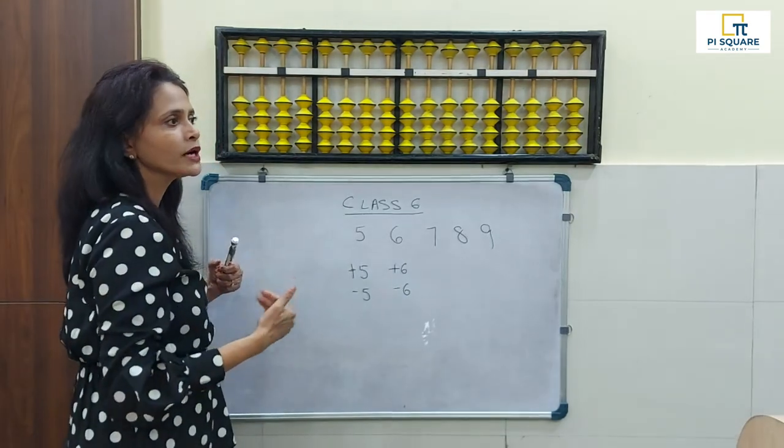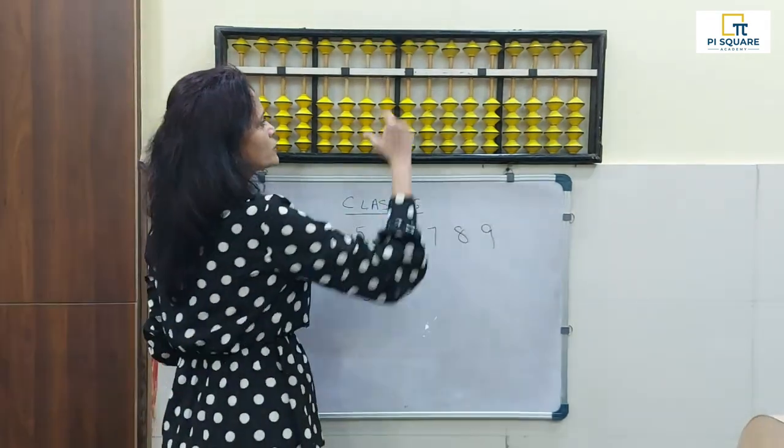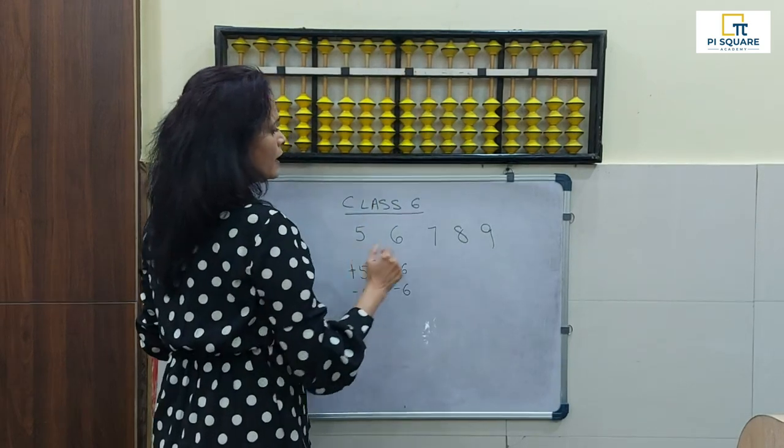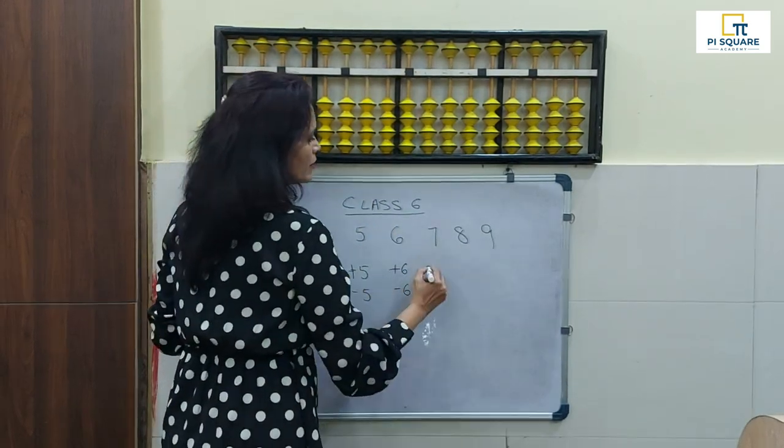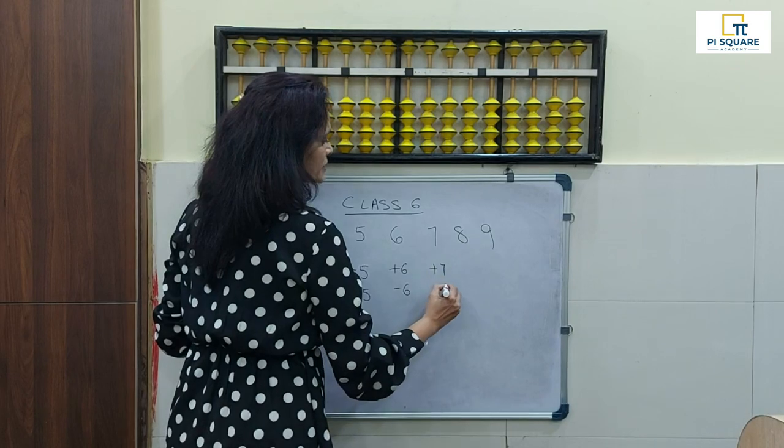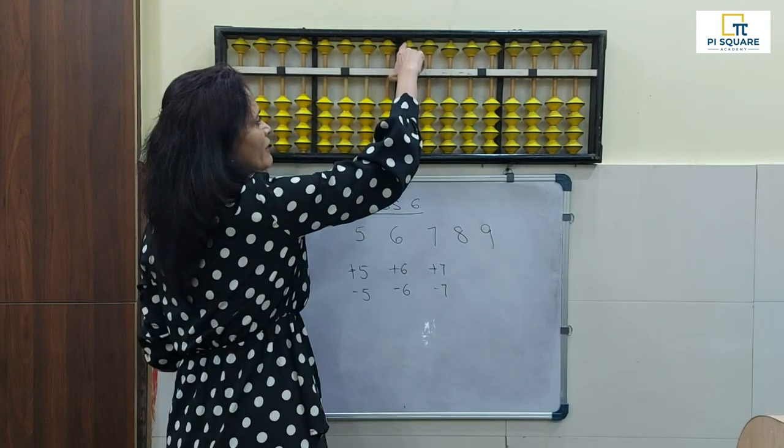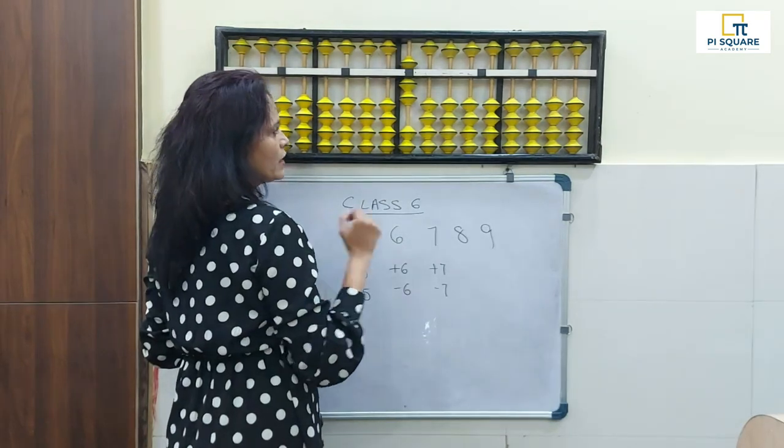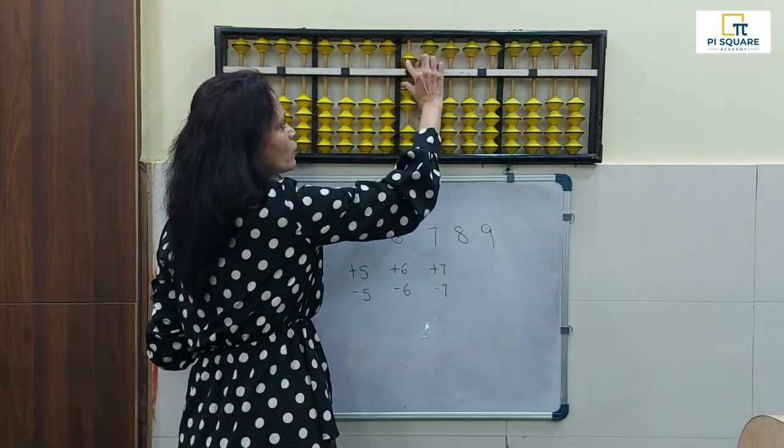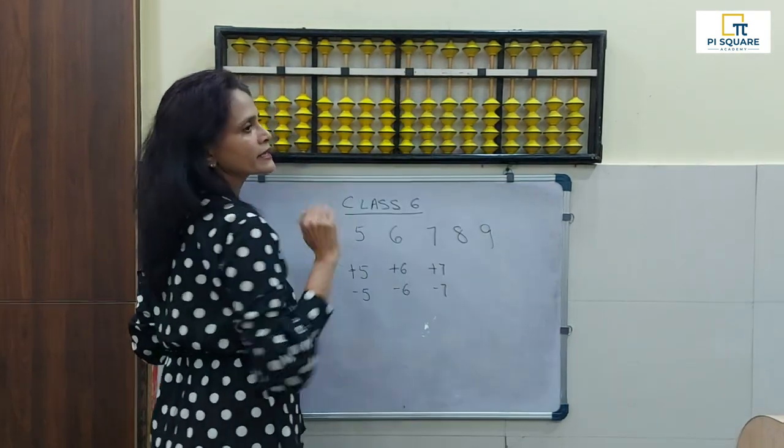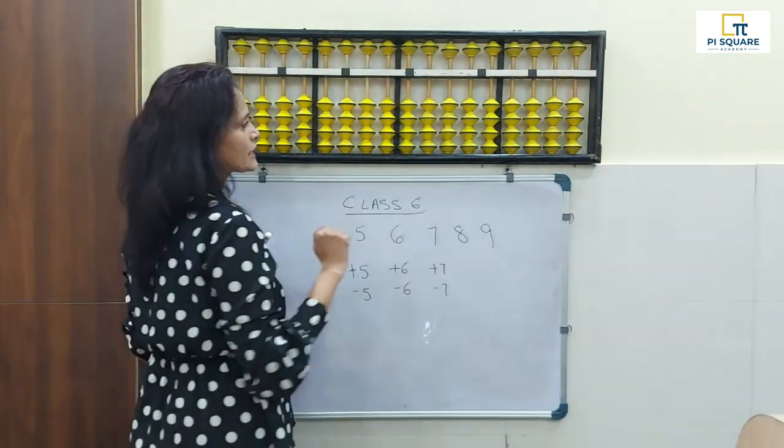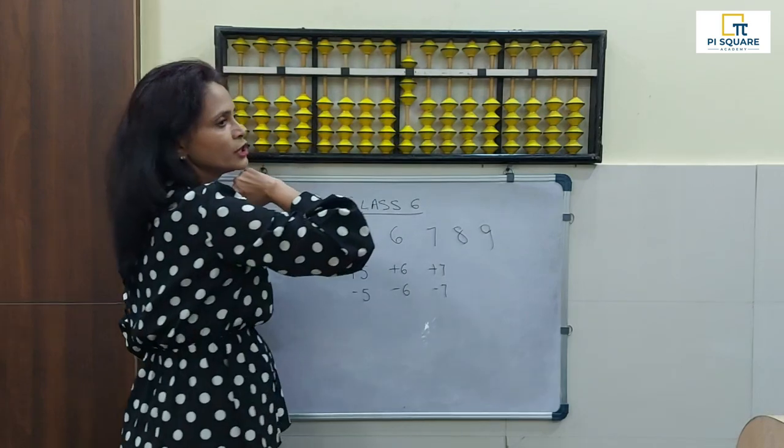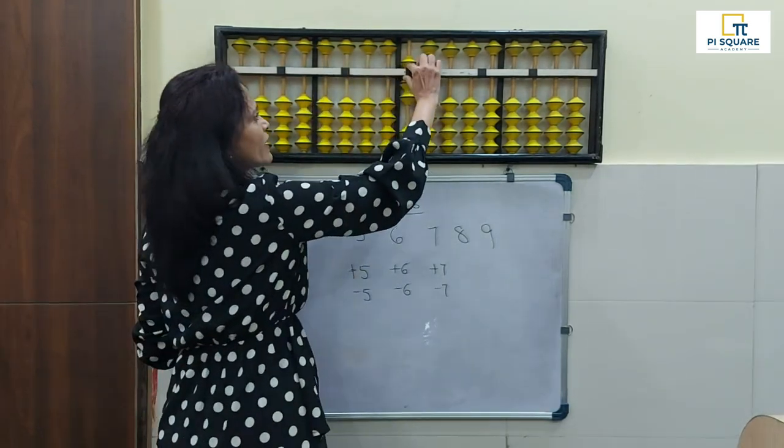Plus 6 and minus 6. 7: plus 7, minus 7. 5 and 2 beads, this gives me plus 7. 5 and 2 beads when they go away gives me minus 7. Once again, plus 7 is 5 and 2. Minus 7 is 5 and 2 go away from each other.